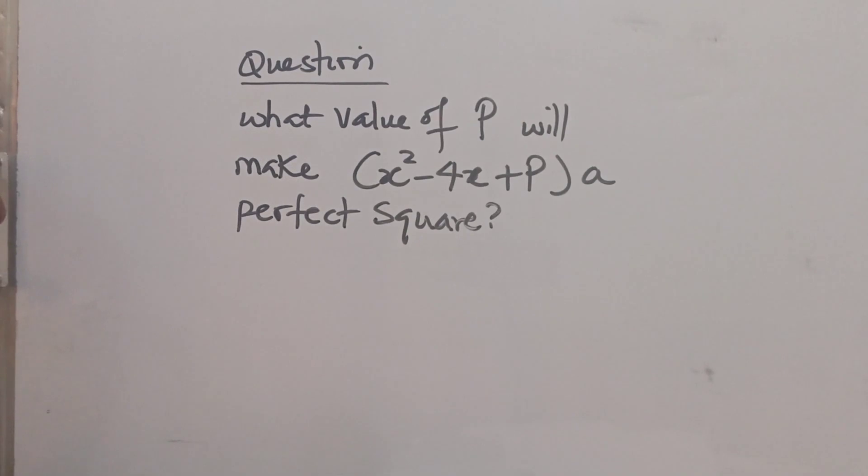So the equation says what value of p will make x squared minus 4x plus p a perfect square?